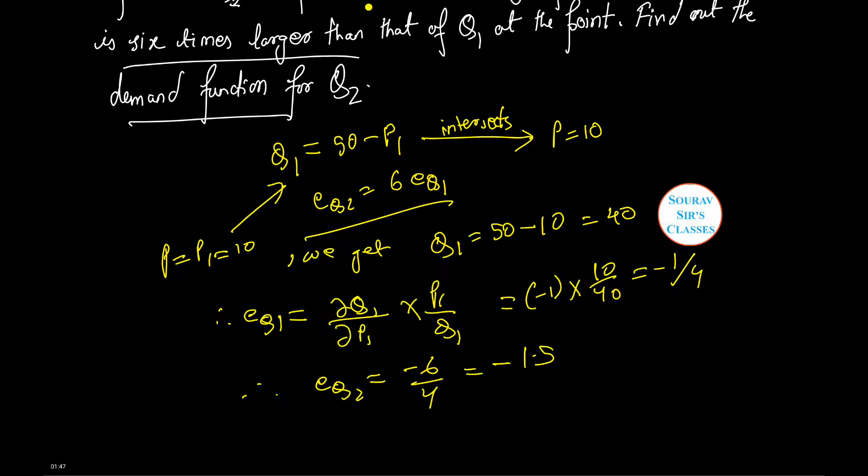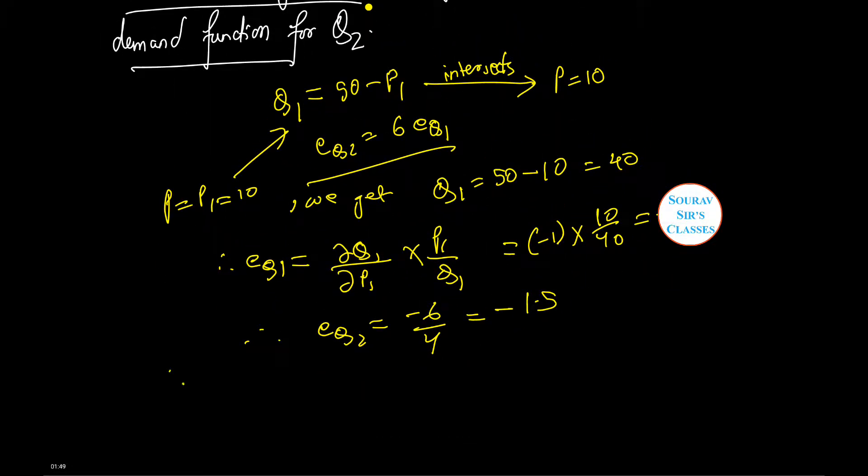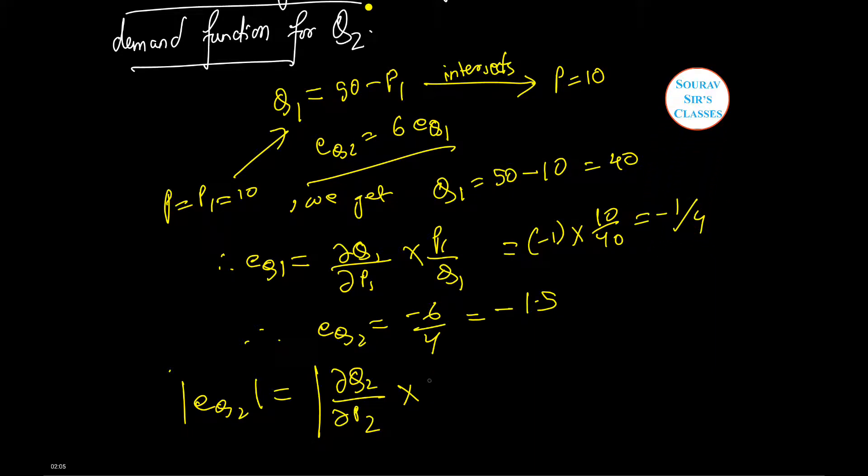Therefore now using this equation we have E_Q2 equals minus 6 by 4 which is minus 1.5. Now mod E_Q2 is equal to mod dQ2 by dP2 times P2 by Q2.